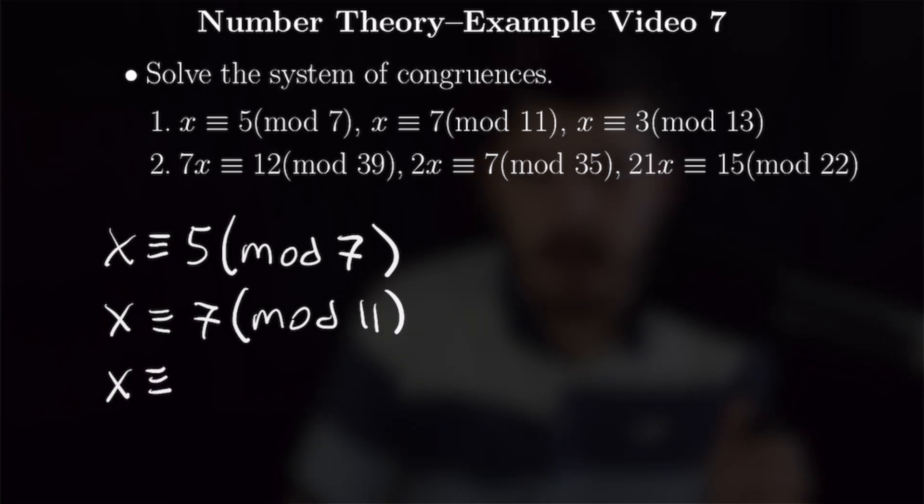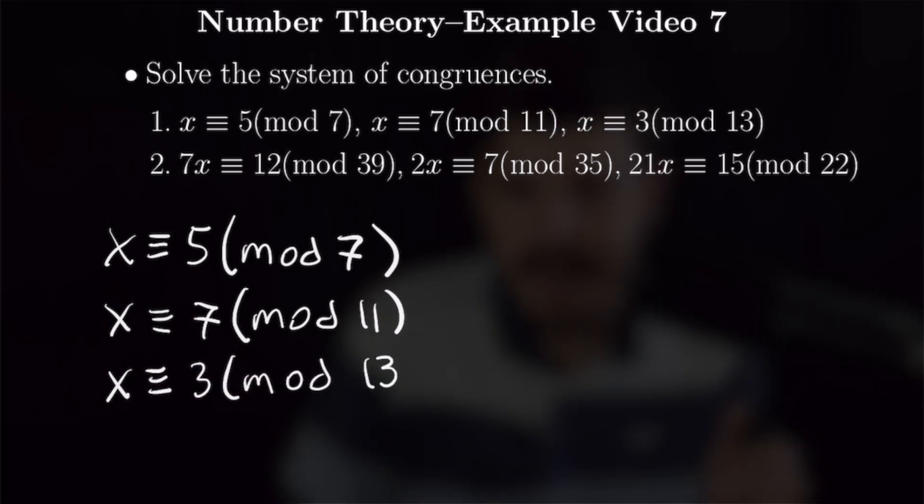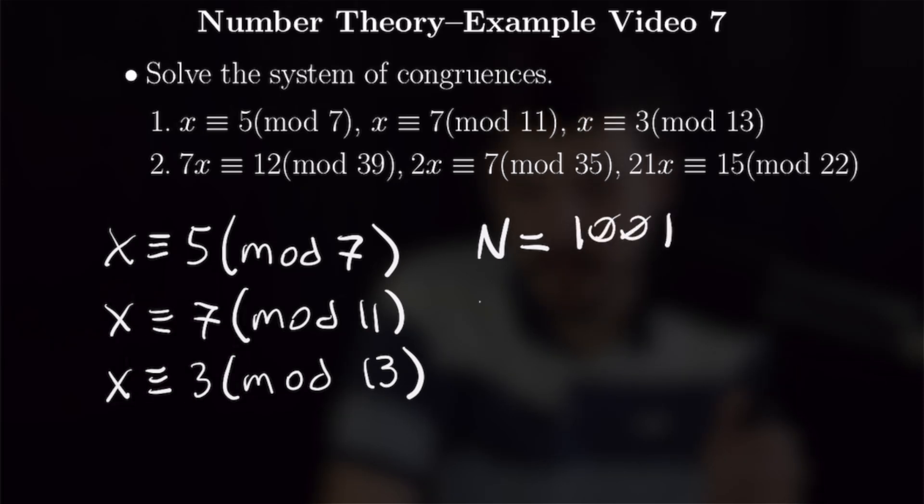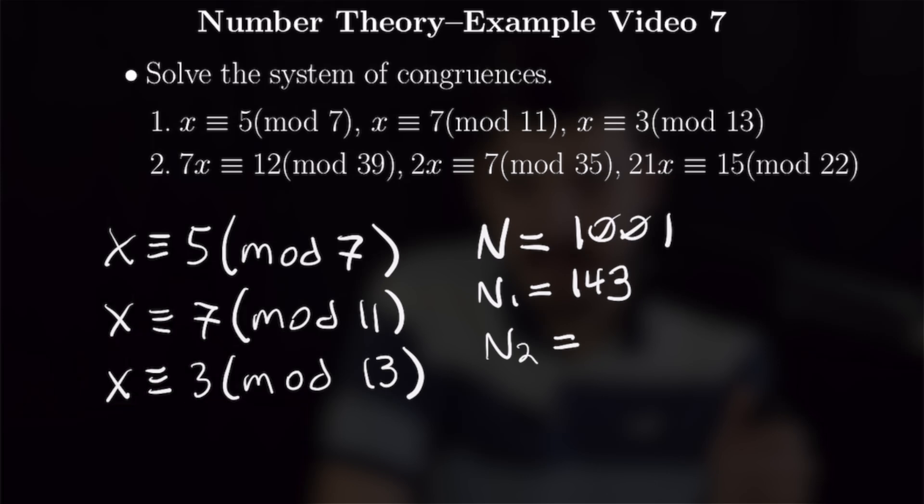Now if you remember from our video on this, we need to calculate our n's. Our big N is calculated by multiplying all of these things that we are taking mod, so we have 7 times 11 times 13, so our big N is equal to 1001. Our n1 is 11 times 13, which is 143. Our n2 is 91, as that is 7 times 13, and our n3 is 77, which is 7 times 11.